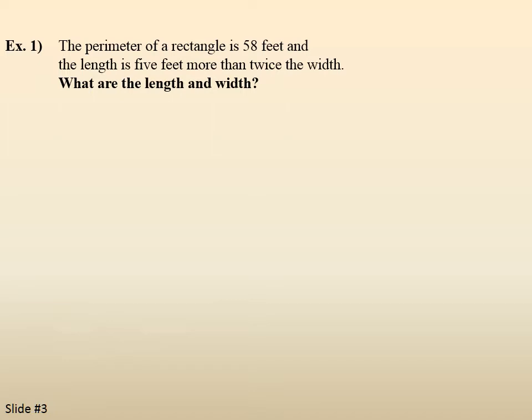Example 1, the perimeter of a rectangle is 58 feet, and the length is 5 feet more than twice the width. What are the lengths and widths? Step 1, draw the basic shape and label. We talked about a rectangle, so I draw a rectangle. Rectangles have lengths and widths.